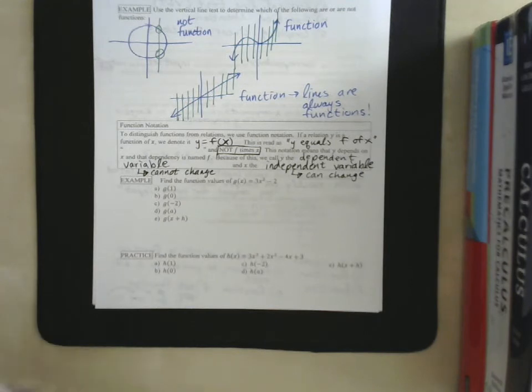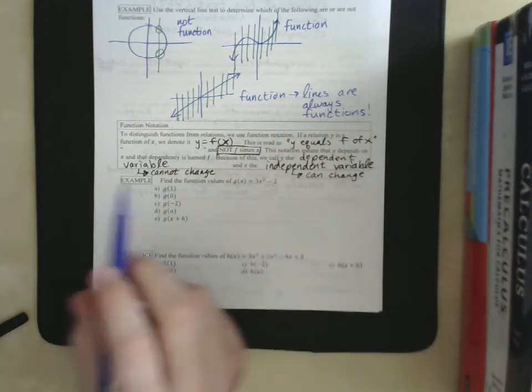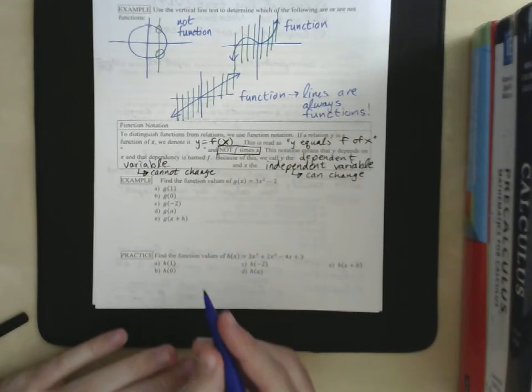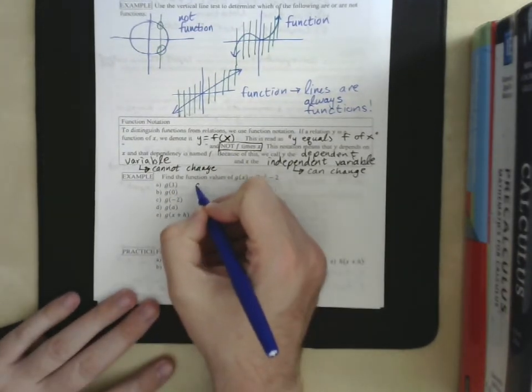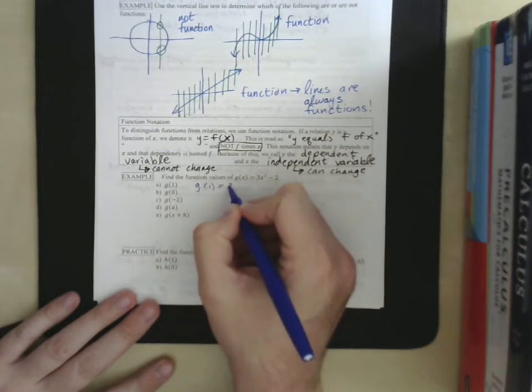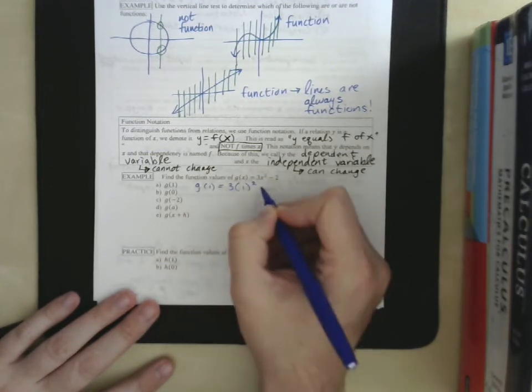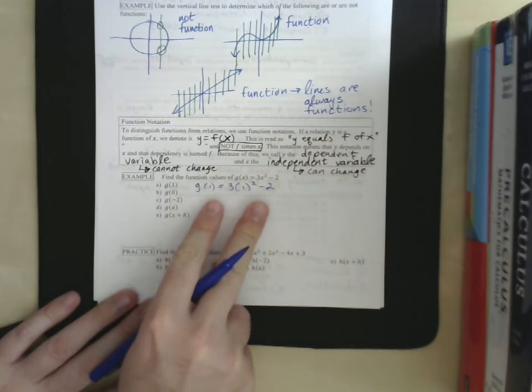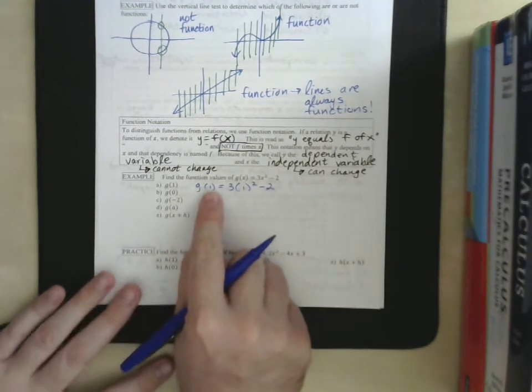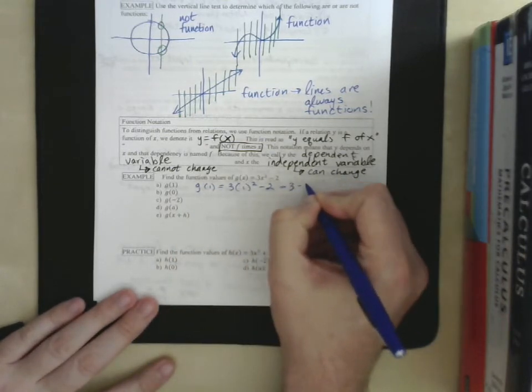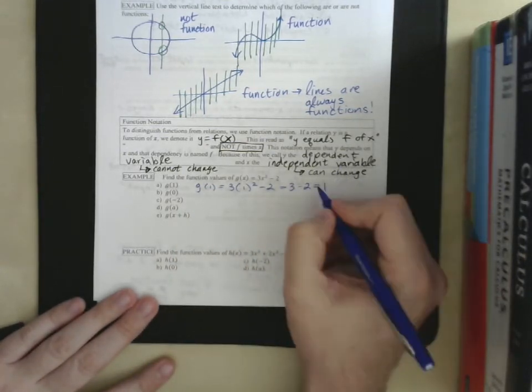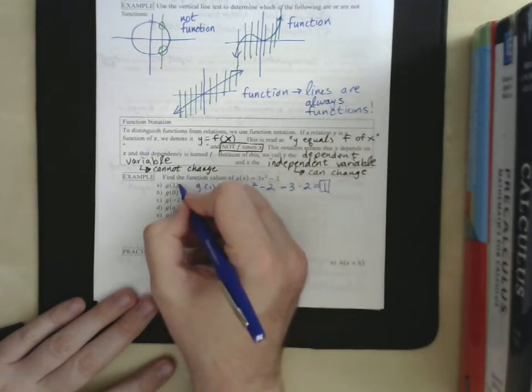If we're going to be working with function notation, we want to talk about function values. We have some problems here, find the function values of g of x. So, when we see g of 1, this is not g times 1. g of 1 equals 3 times 1 squared minus 2. So, we replace all instances of what x used to be with whatever we see here. 1 squared is 1, so this is 3 minus 2, which is 1. And that's our function value for a.